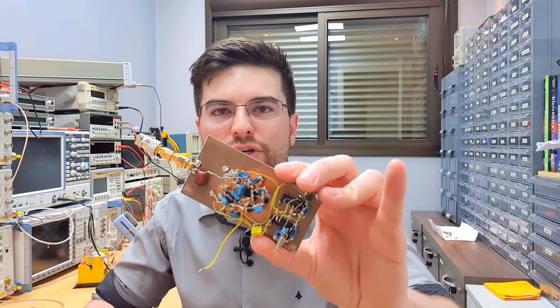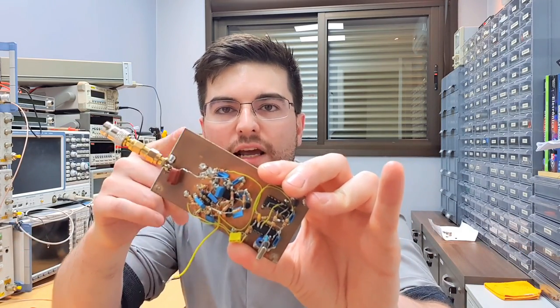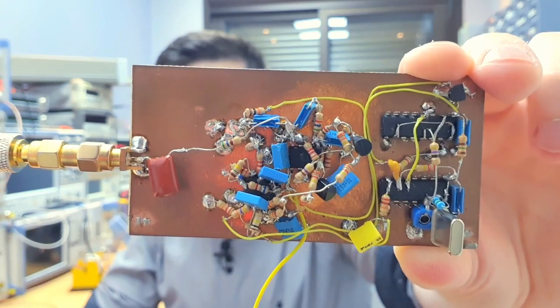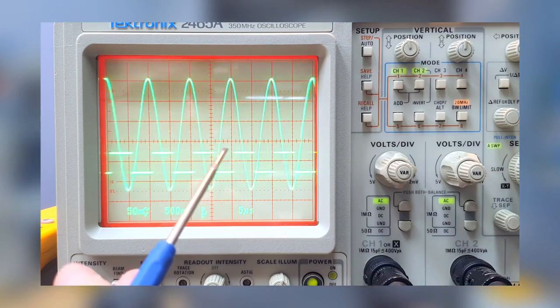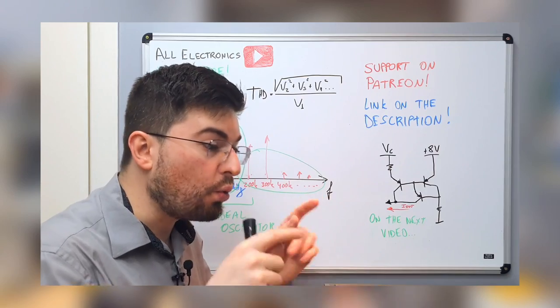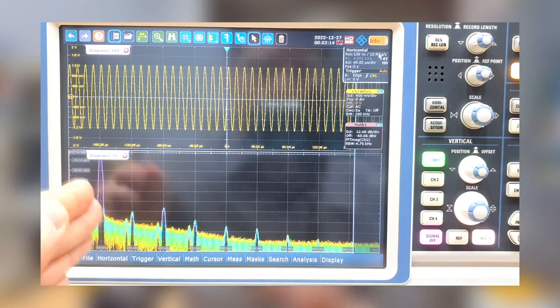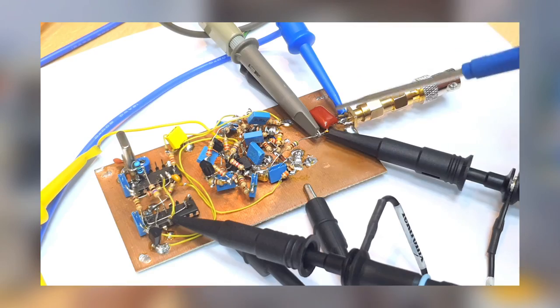Hey guys! Welcome to Allotronics! I'm Gregory and in this video we are going to take a look at the Wien bridge oscillator we explored on the last video. This oscillator has automatic gain control and a PLL loop. We're also going to see how we can be fooled by the oscilloscope. Take your coffee and come with me.